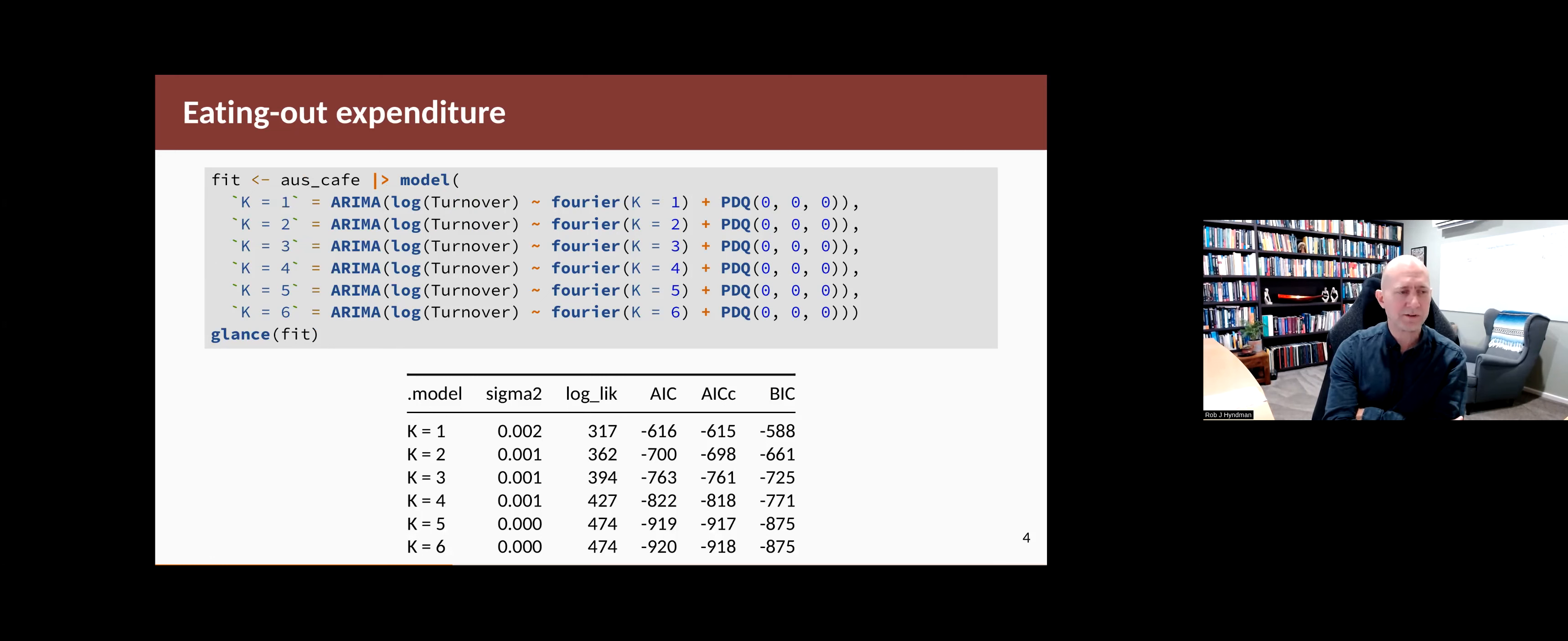The largest we can deal with is k equals 6 because that's fully saturated the model. It's like putting dummy variables in for each period. So we fit these six models and as we can see, the one with the smallest AICC statistic is actually k equals 6. So we need all of the Fourier terms in the model. Let's have a look at the different models and how they look.